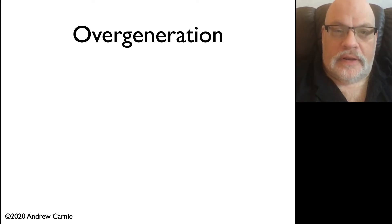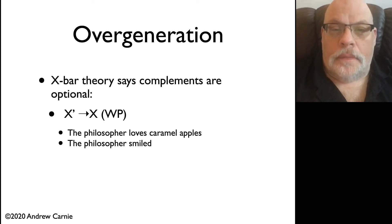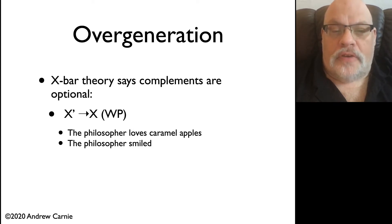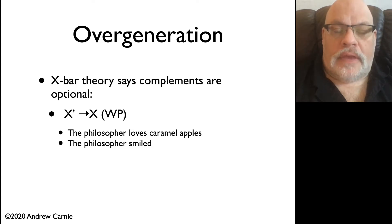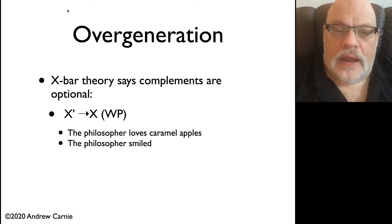Let's look at an example. X-bar theory says that complements should be optional. And this is certainly the case if you compare the sentences: the philosopher loves caramel apples, and the philosopher smiled. The direct object, which is a kind of complement, can be present in the first sentence and absent in the second. This suggests that the optionality in this rule is correct.